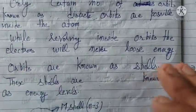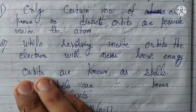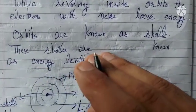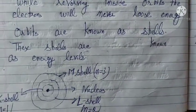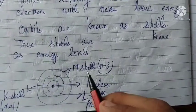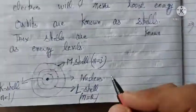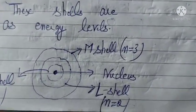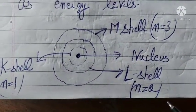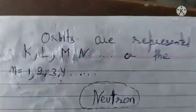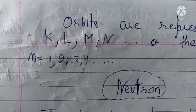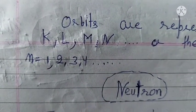The second name of orbits is shells — you can say shells or orbits. According to Bohr, these shells are also known as energy levels. The shells that are possible are: the first shell is K shell, the second shell is L shell, the third shell is M shell, and the fourth shell is N shell. These are represented as N=1, N=2, N=3, N=4, or by the alphabets K, L, M, N.